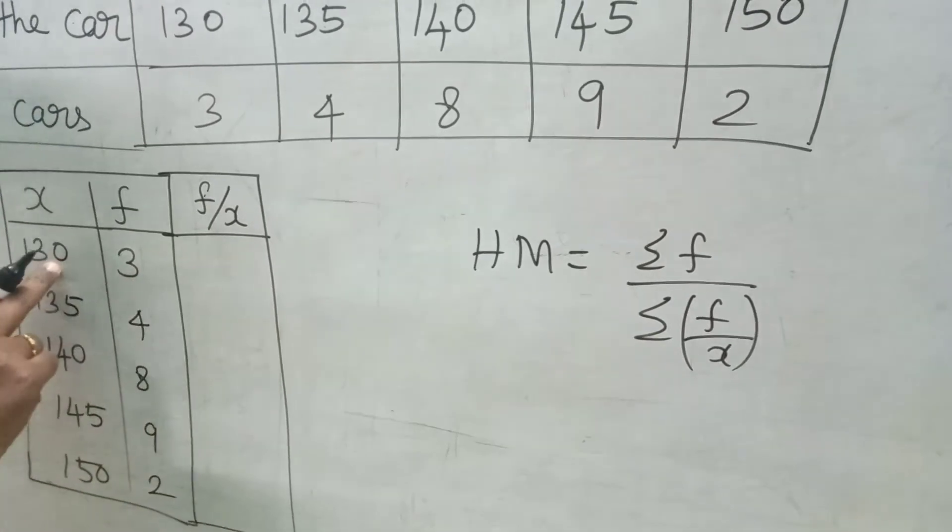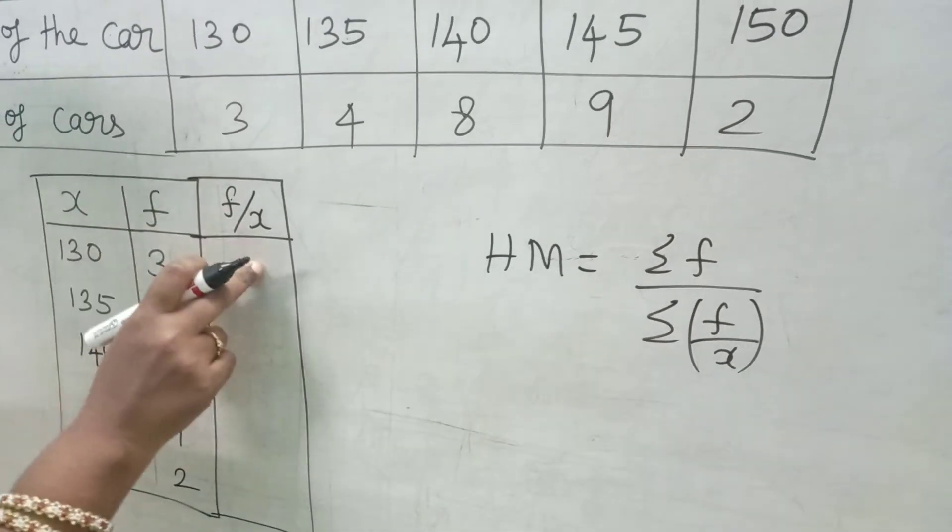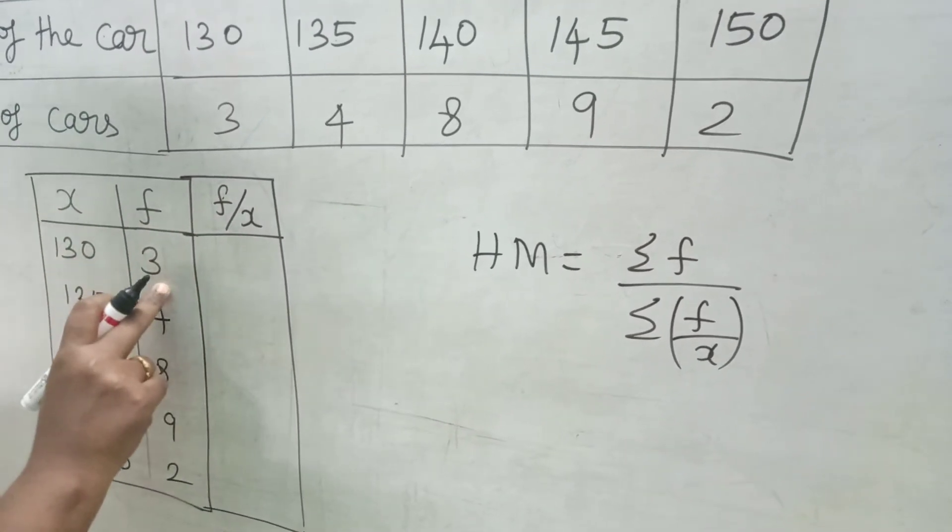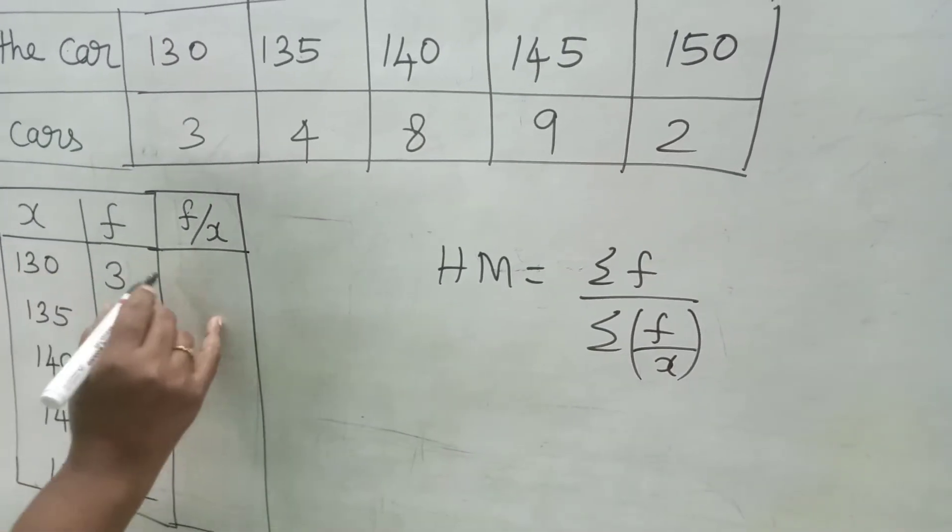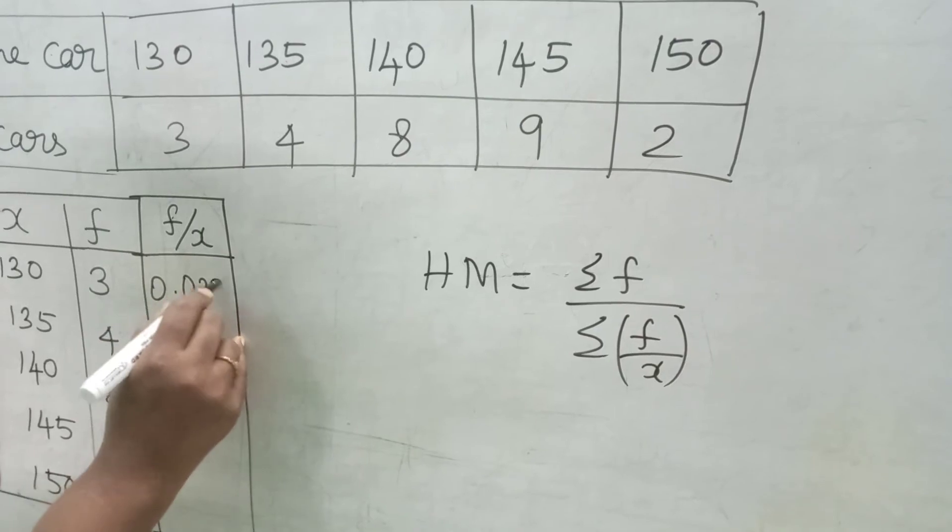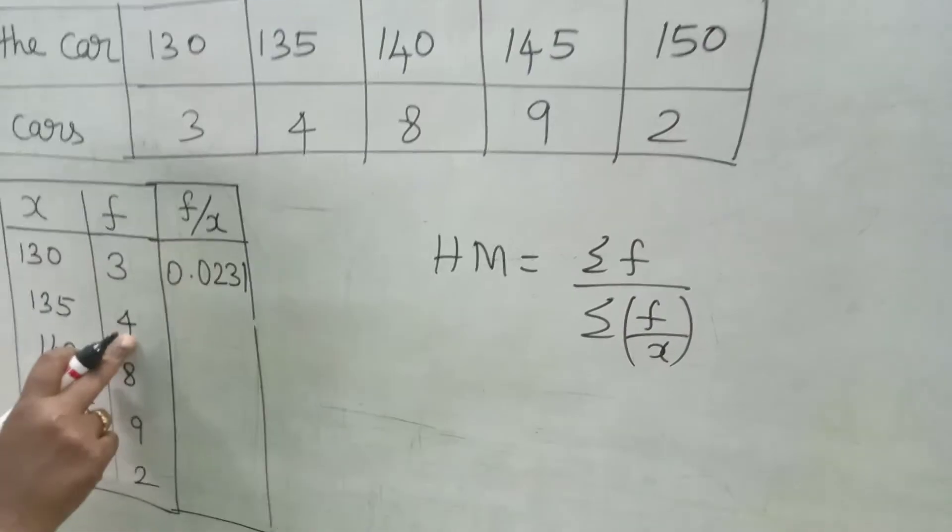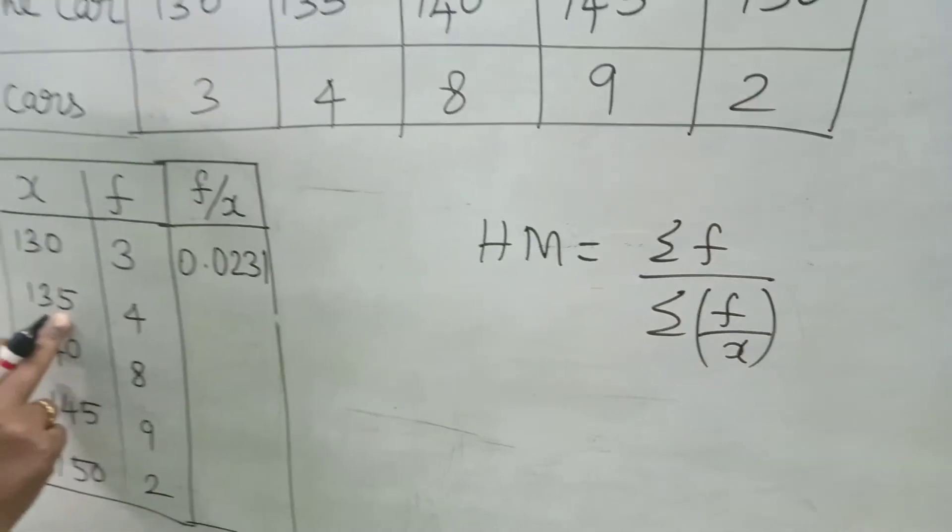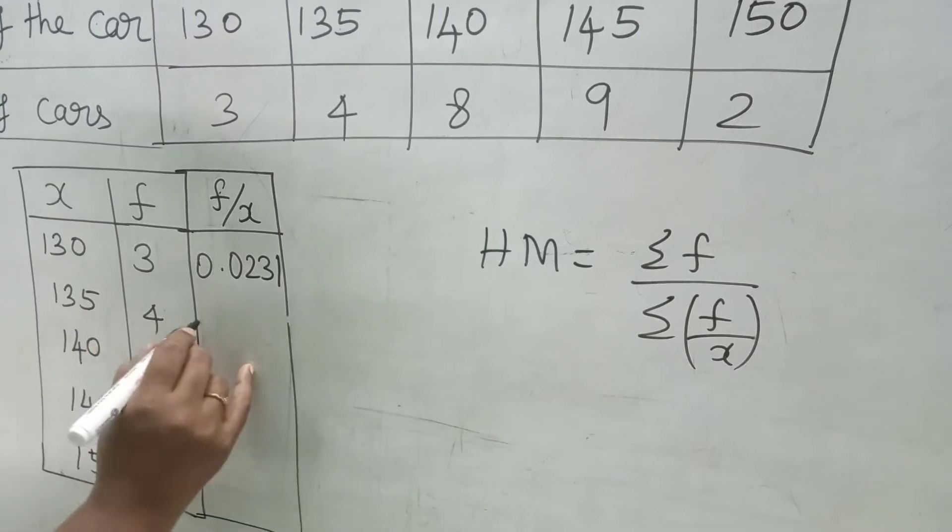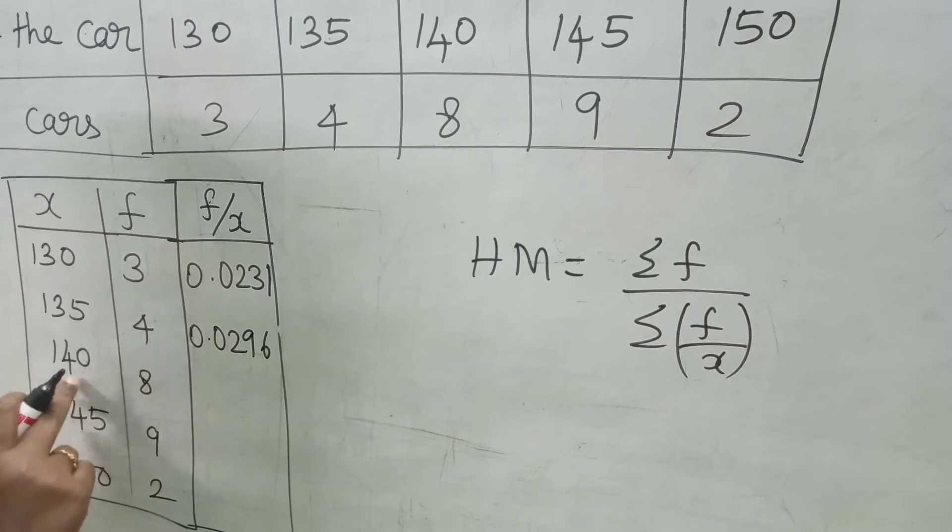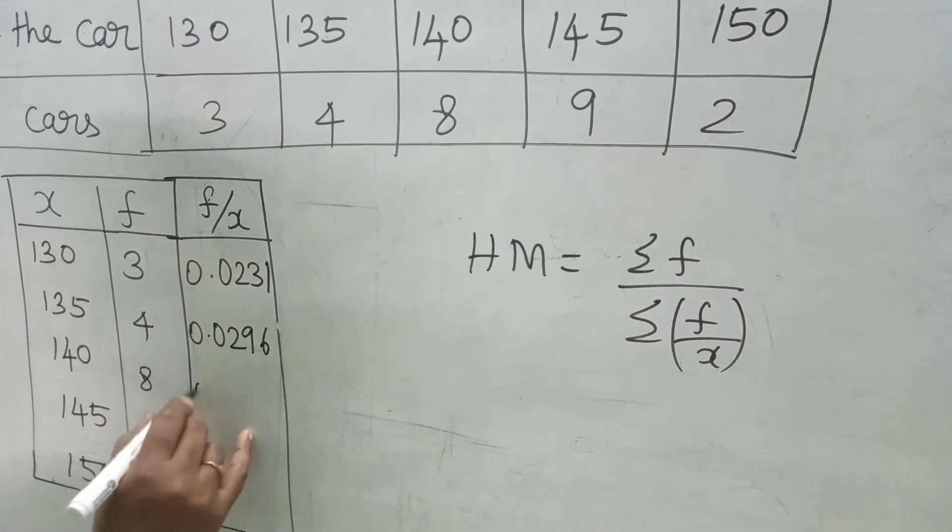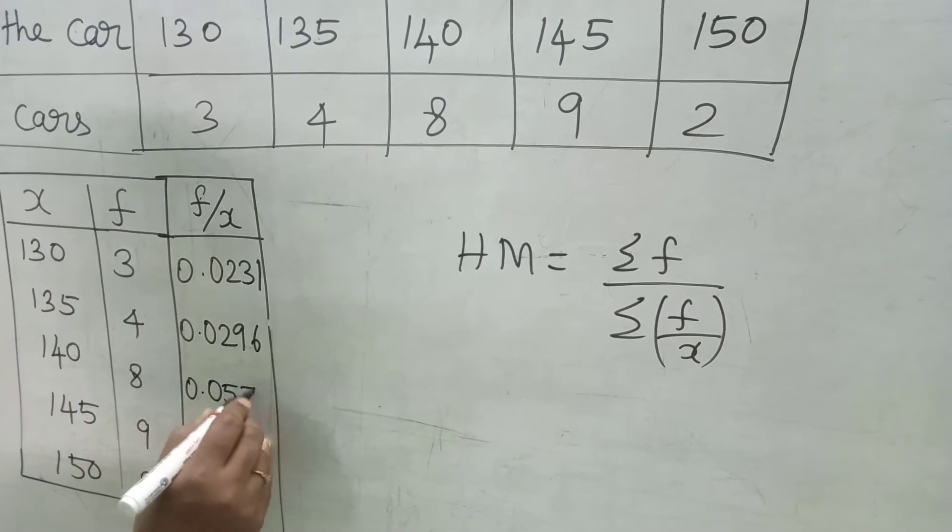Using the help of calculator, F value is 3, X value is 130. We need F by X, therefore 3 in the numerator, 130 in the denominator. 3 divided by 130. That is 0.0231. Next, 4 divided by 135. That is 0.0296. 8 divided by 140 is 0.0571.